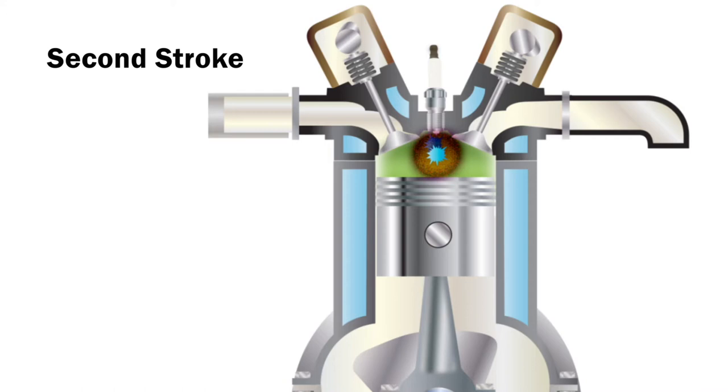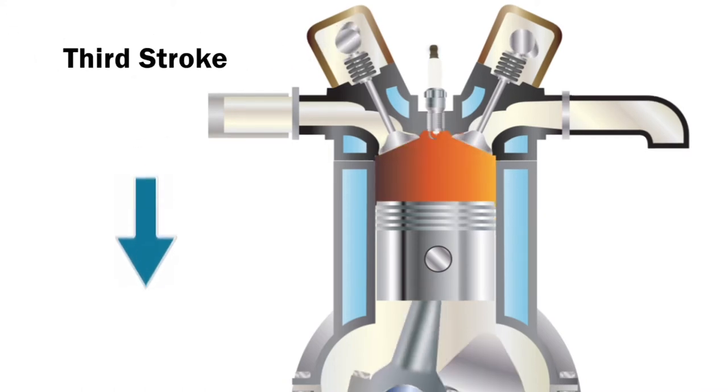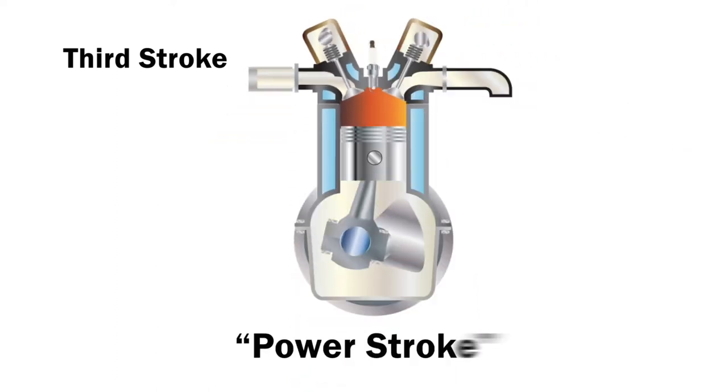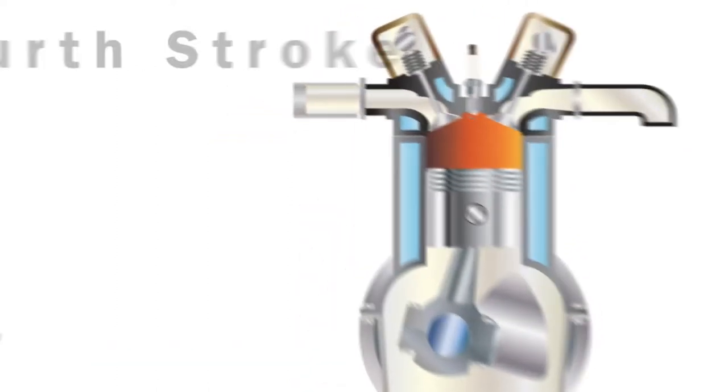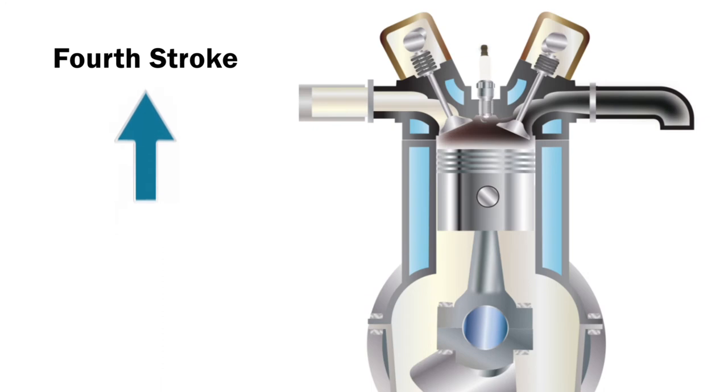After ignition, the burn from combustion pushes the piston down on the third stroke. This is referred to as the power stroke. The fourth stroke is an upward stroke to eject the burnt gases out of the cylinder through the exhaust.